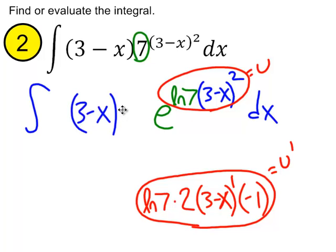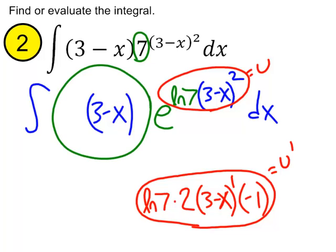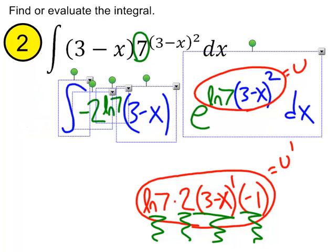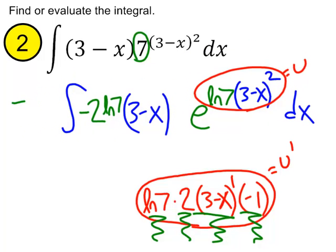Let's go back to our integral up top. And let's turn that into a u prime sitting right next to the exponential function. So, we've got the 3 minus x covered. Let's put a negative 2 in front as well as the ln 7. And in order to make that legal, we'll put negative 1 over 2 ln 7 out front.